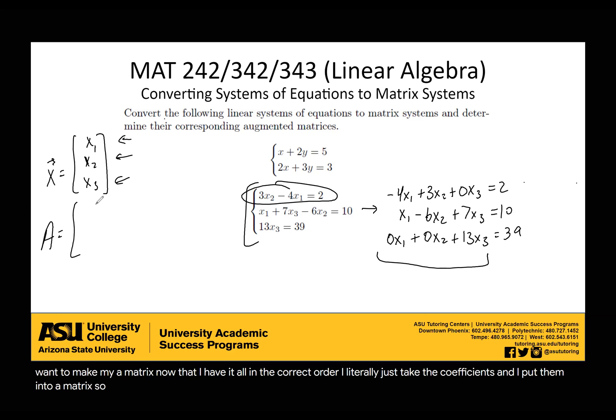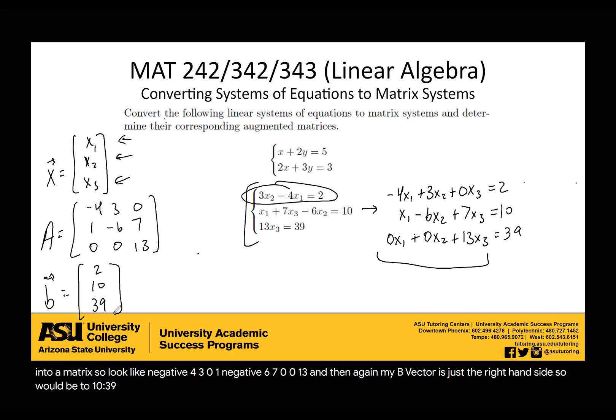So it would look like [-4, 3, 0; 1, -6, 7; 0, 0, 13]. And then again, my B vector is just the right hand side, so it would be [2, 10, 39]. So if I were to take this A and multiply by this x, I would end up getting this B.